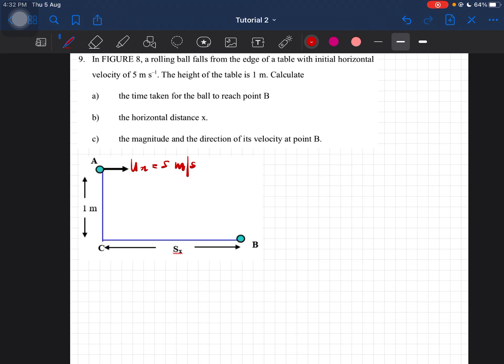This means that sy here would be equal to negative 1 meter. And then based on this diagram, this initial velocity is at the horizontal, meaning the y component is equal to zero.